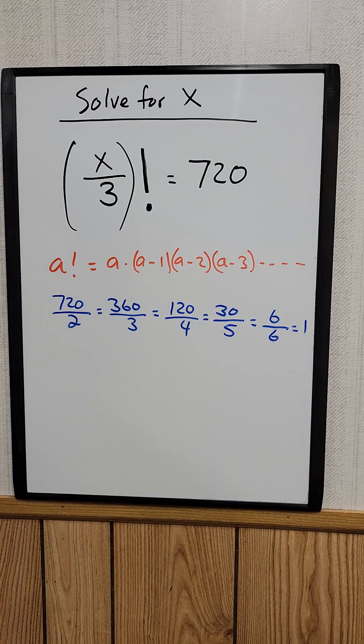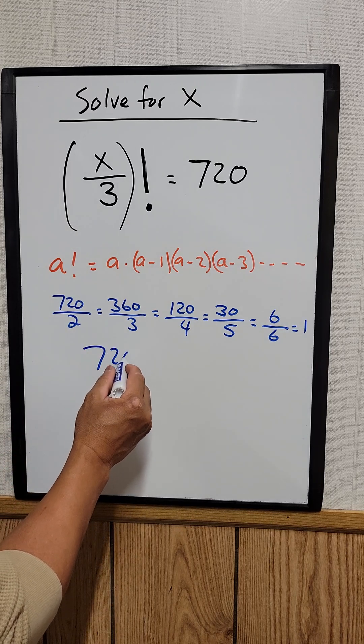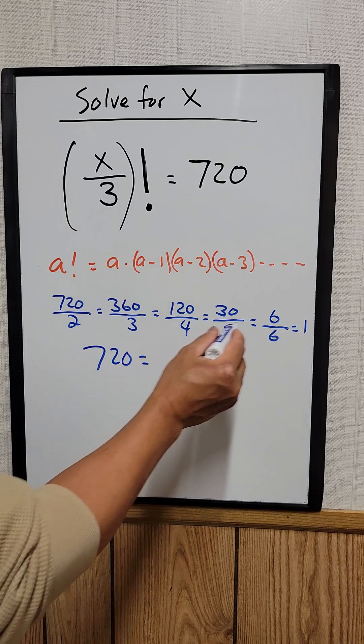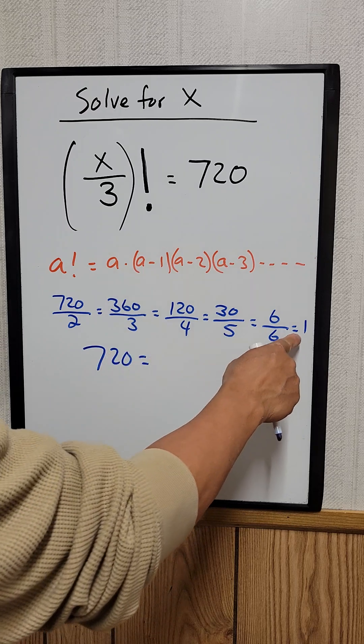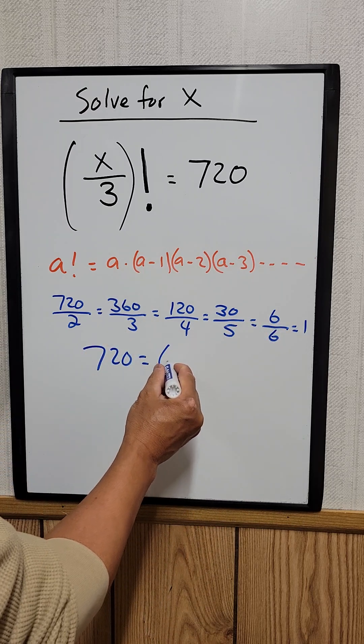So we know that 720, if we convert that to a factorial, which is equal to, you can't divide anymore. So when we get to the 1, that's it. Would be 6 factorial.